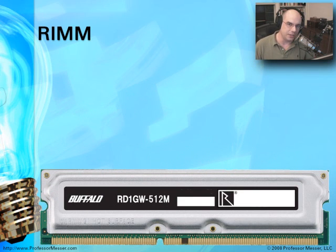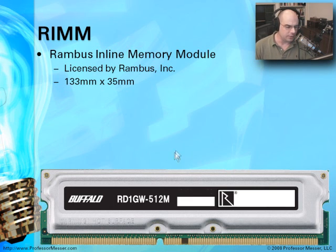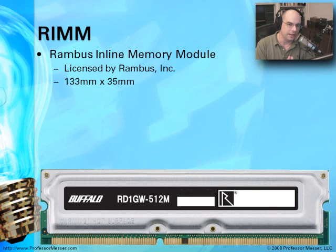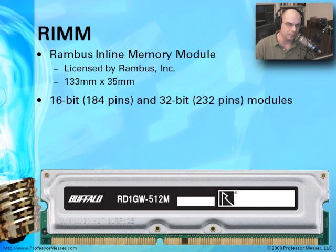There is another type of memory you really don't see much anymore called a RIMM — Rambus Inline Memory Module. This was created by Rambus Incorporated to address a gap in memory speeds as we moved into the Pentium world. You'll notice this memory looks different — it has a metal shield all around it because this memory gets very hot, and that shield dissipates some of the heat off of those memory chips. Every single Rambus Inline Memory Module has this memory shield on it — it was part of the specification.